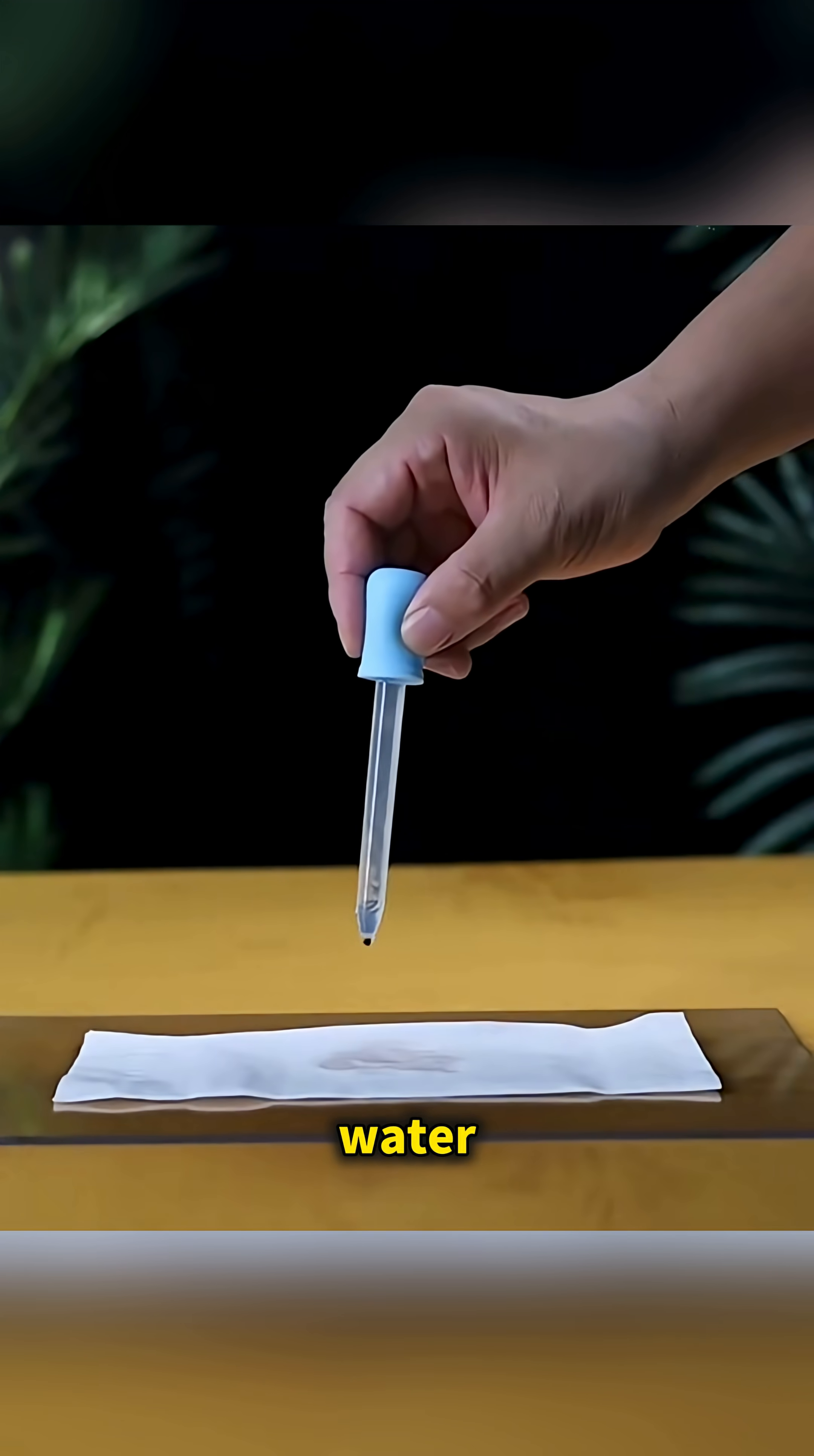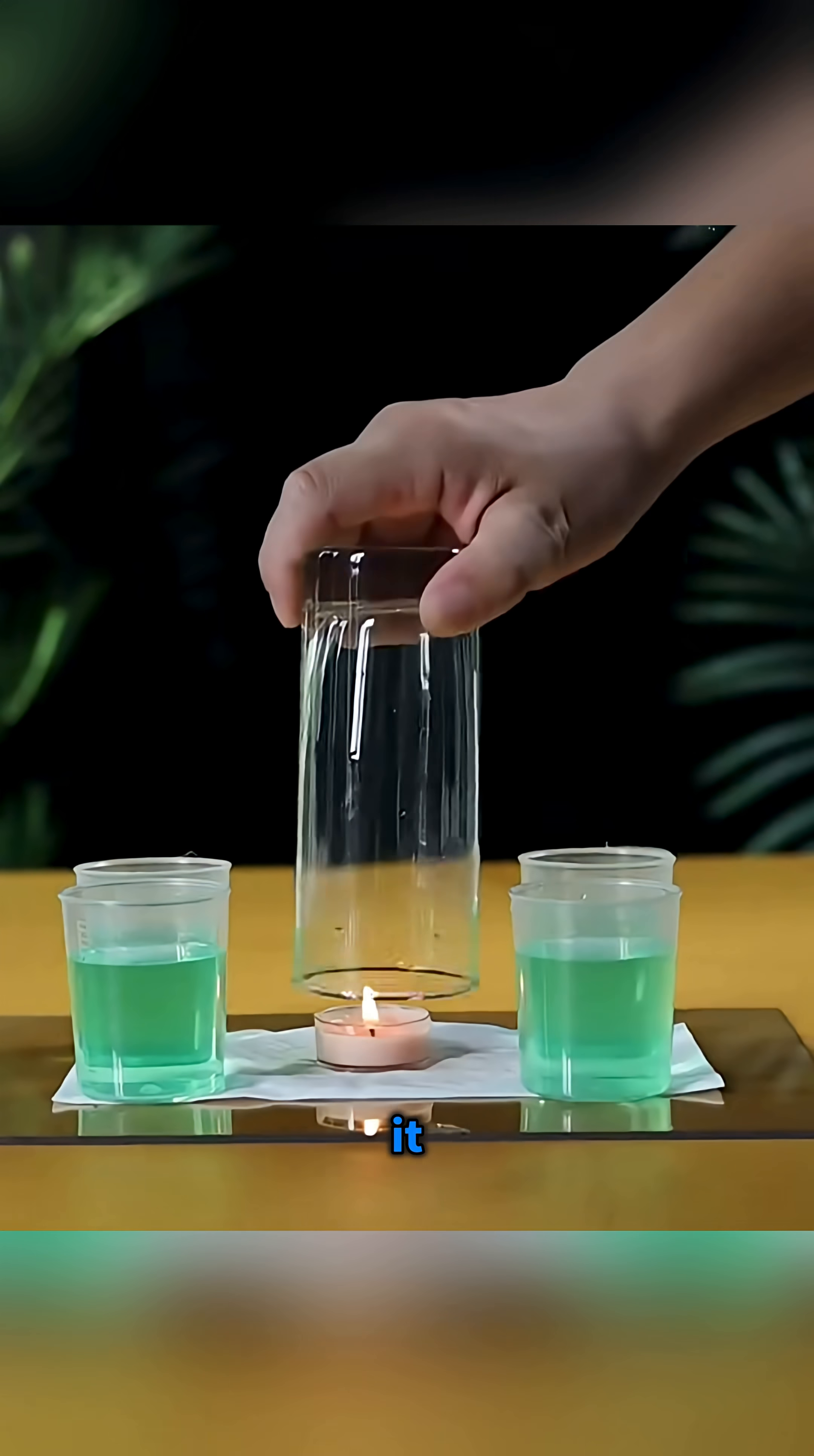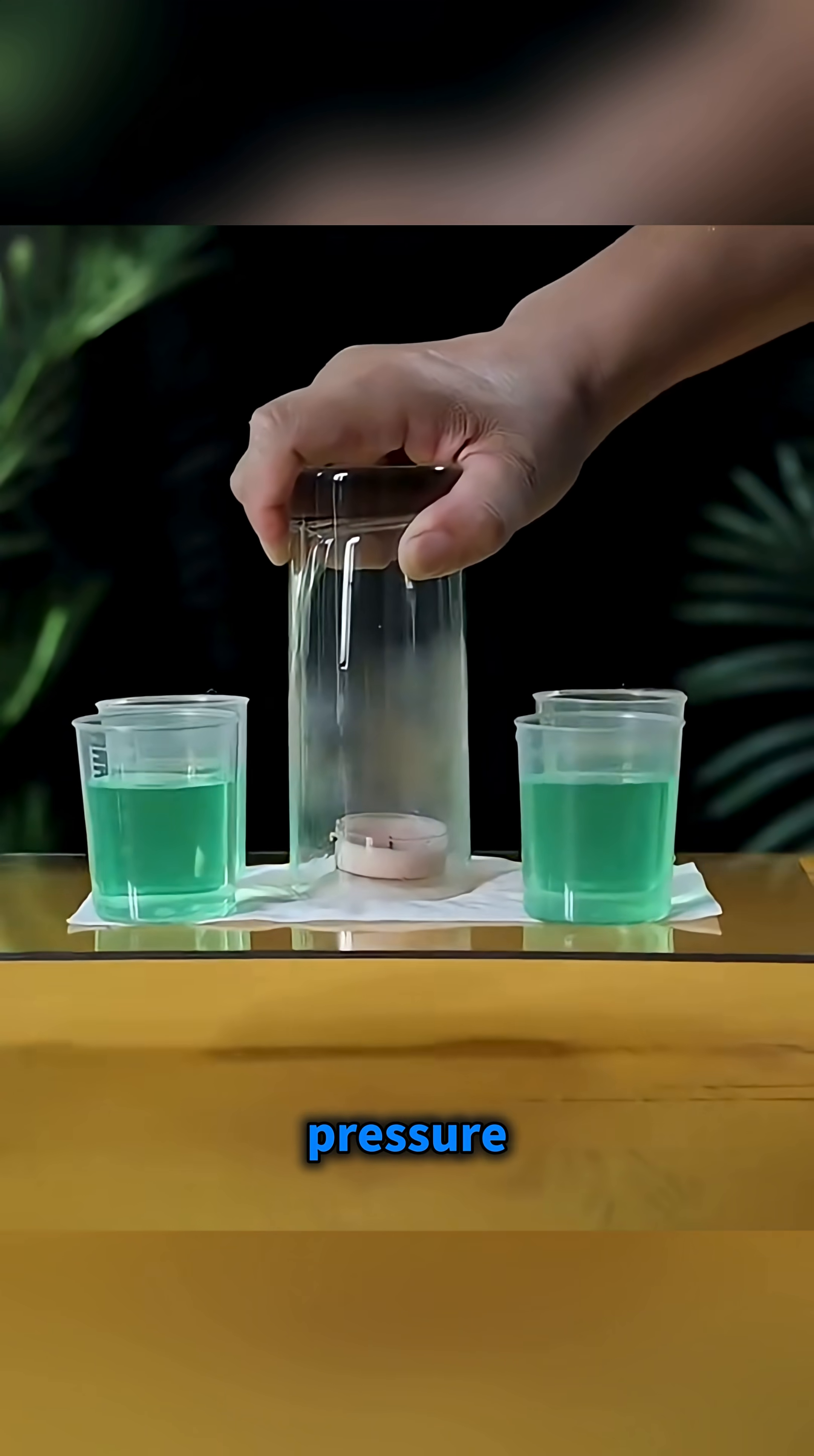Place a plastic sheet on the table, spread a napkin on top, drip water, and light a candle. Surround it with four cups of water, cover it, lift the glass, and the whole board rises. Air pressure power!